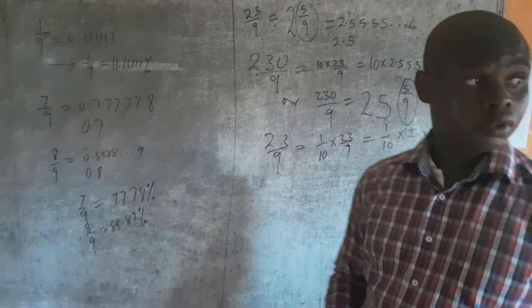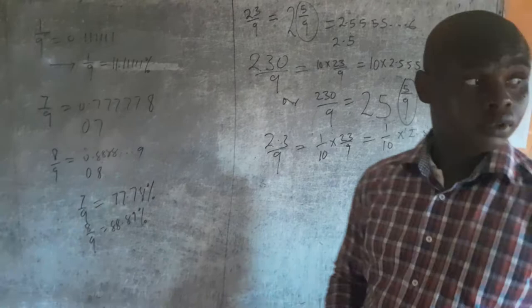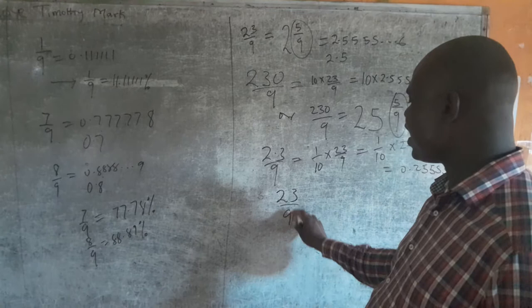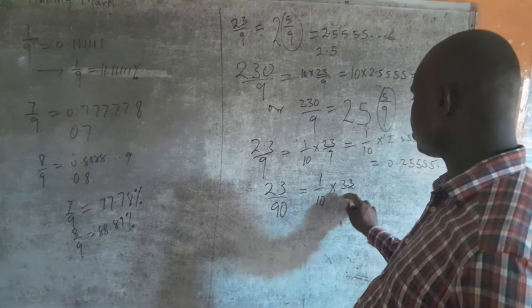Now 23/90 is like saying 1/10 times 23/9, because 90 is 10 times 9. So I will simply divide the result of 23/9 by 10.